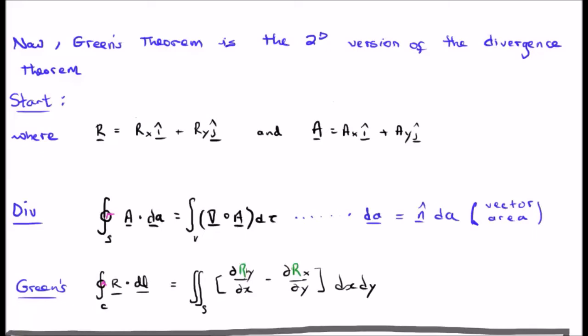So what we are going to do now is begin by looking at the divergence theorem and let's see if Green's theorem is the two dimensional version of the divergence theorem.